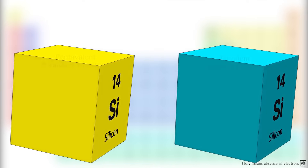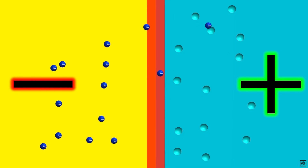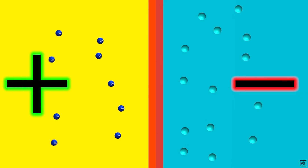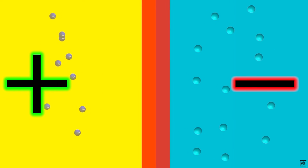Now, if we join them, then at the junction, the electrons from N-type will fill the holes in P-type, depleting the charges near the junction. This region is known as the depletion region. If we connect P-type to the positive terminal and N-type to the negative terminal of the battery, then the depletion layer reduces, and this is called forward bias. If the polarity of the battery is reversed, the depletion layer increases, and this is called reverse bias.